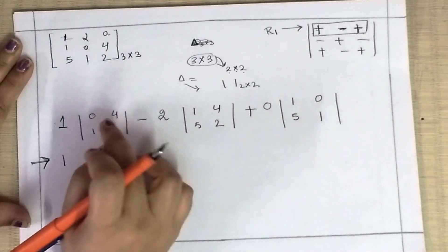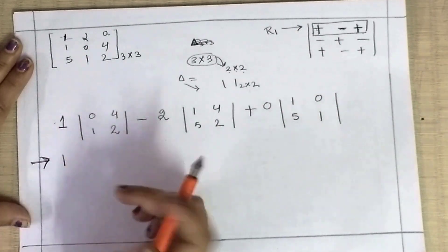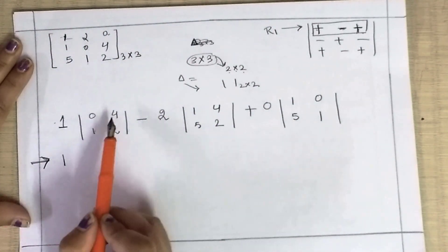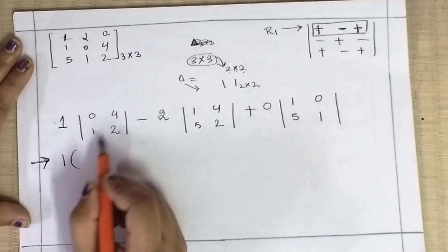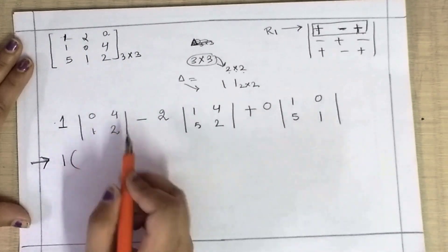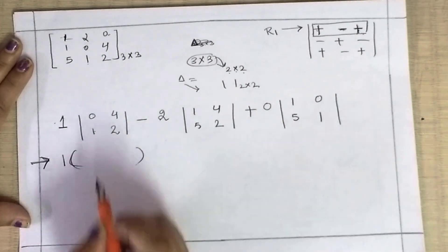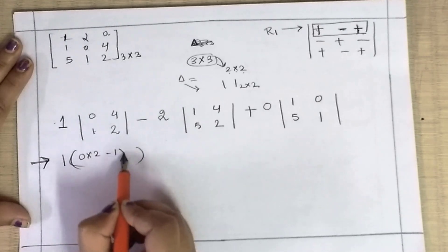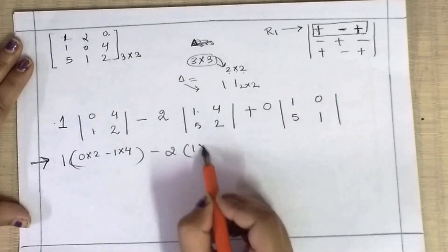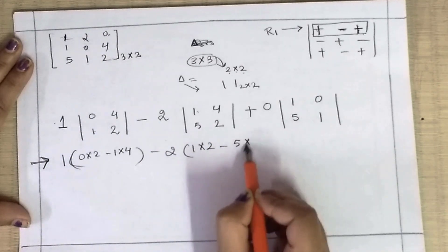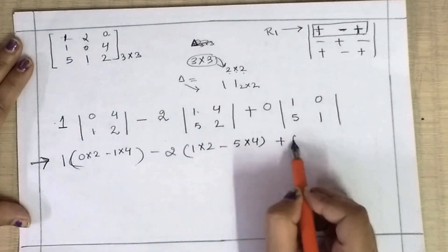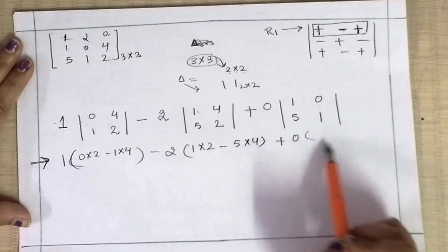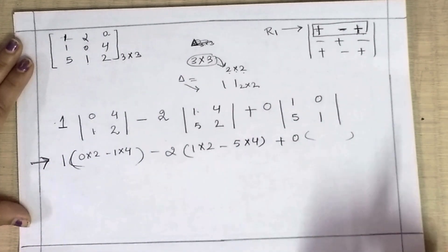Now let's solve this. An order 2 determinant is very easy to solve. You solve the circular bracket as normal. So: 1 with (0×2 minus 1×4), then 1×2 minus 5×4, plus 0. Since there is 0 as an element, whatever multiplies with 0 will be 0 ultimately, so we do not need to solve that term.